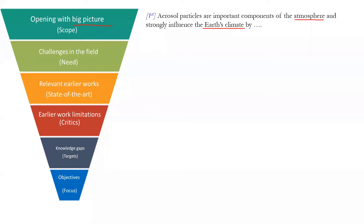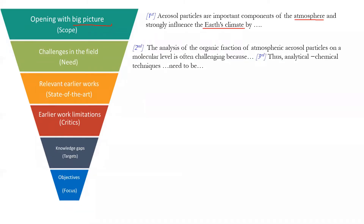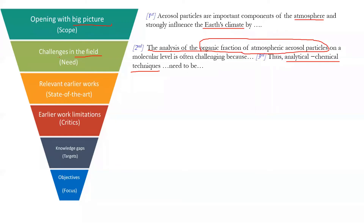That's how English articles are written. You want to tell people how important your work is — so important that it matters to everyone on the planet Earth, because everyone is affected by the atmosphere and the climate. The second and third paragraphs discuss the analysis and organic fraction. Now it's further narrowed down — we are talking about the field, specifically organic aerosol. This is the big picture, this is your field, and it's further narrowed down to analytical techniques. You mention the need — that word: need — something that needs to be done.